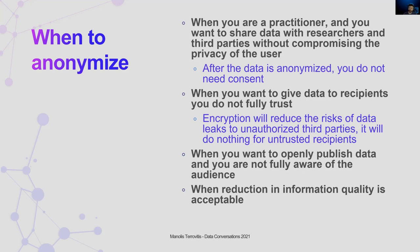On the other hand, techniques like encryption work well when you want to ensure the security of the data transfer channel, but they do not protect you against the recipient. When someone gets anonymized data, they cannot reverse the transformation — the guarantee is that they will not discover anything more than what they get. When you get encrypted data, you get the decryption key, so you can rediscover the original data. Encryption helps to transfer data safely, whereas anonymization limits the personal information that the recipient gets.